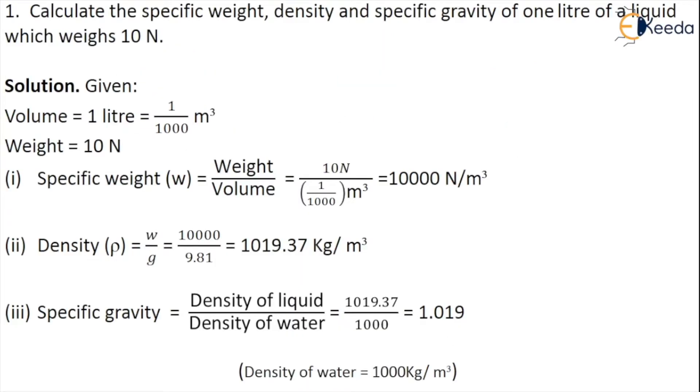The first problem is: Calculate the specific weight, density and specific gravity of 1 liter of liquid which weighs 10 newtons. First we have to write what data is given to us. The volume given is 1 liter, we can convert it into meter cube, and the weight given is 10 newtons.